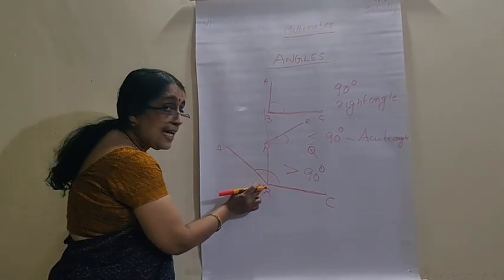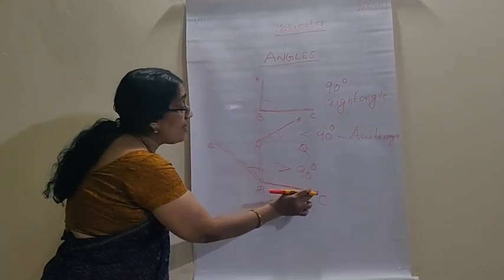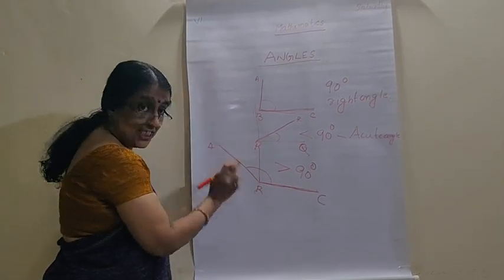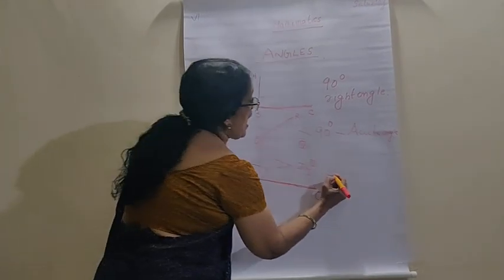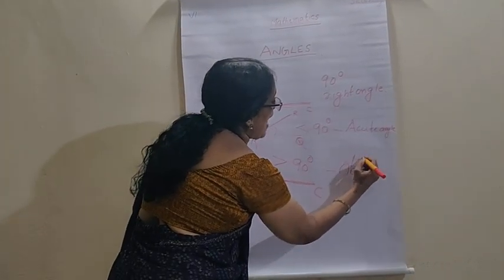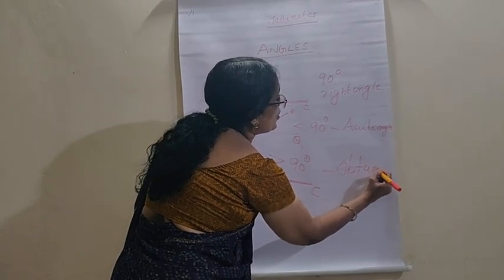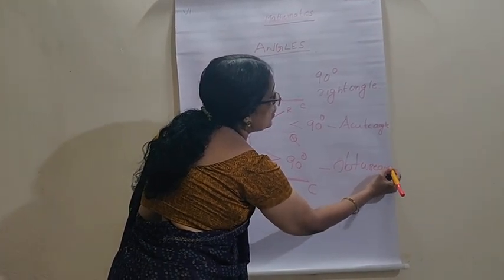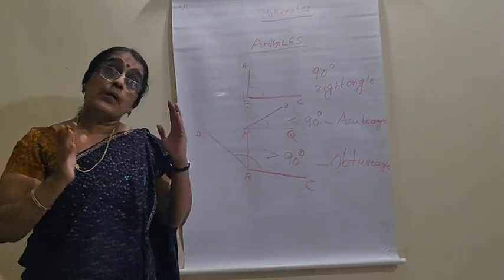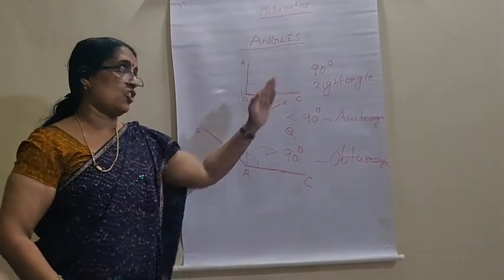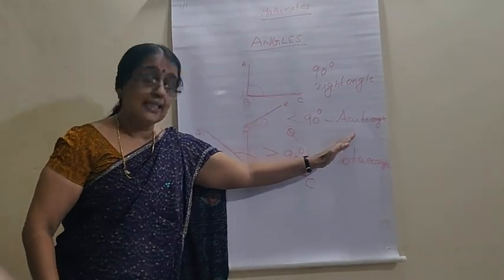If the second hand is moving away from the base line, we say, it is, like, greater than 90. And, we call this angle as, obtuse angle. So, when you find, when you see an angle, you can determine, whether it is right angle, whether it is acute angle, whether it is obtuse angle.